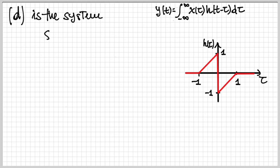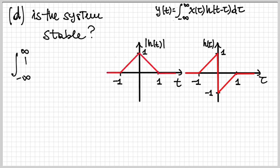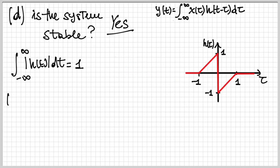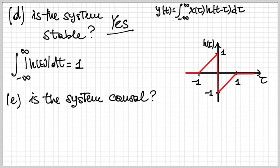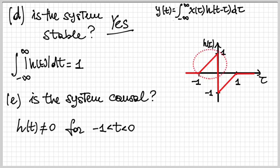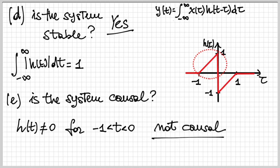Is the system stable? To assess stability, we check whether the impulse response is absolutely integrable. The integral of |h(t)| dt equals 1, which is finite, so yes — the system is stable. Is the system causal? To assess causality, we check whether the impulse response is non-zero for negative times. Between −1 and 0, the impulse response is non-zero, so we conclude that the system is not causal.